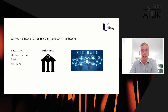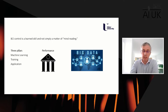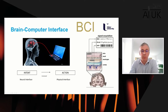One key message: BCI control is a learned skill, not simply mind reading. It involves training individuals over multiple sessions of repetition, has an application focus — such as communication devices for those who cannot communicate or rehabilitation devices — and AI and machine learning play a big part in learning from brain activity. I'm going to focus on motor imagery BCIs, where a person relays intent by modulating brain activity through imagined movement.